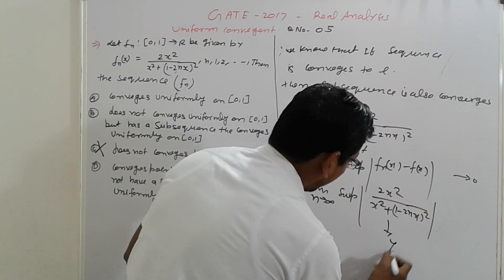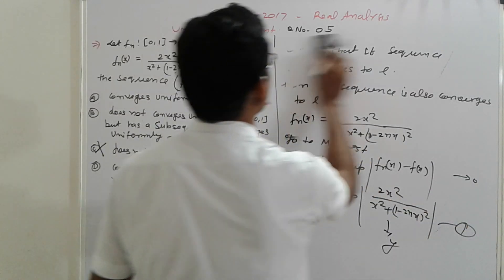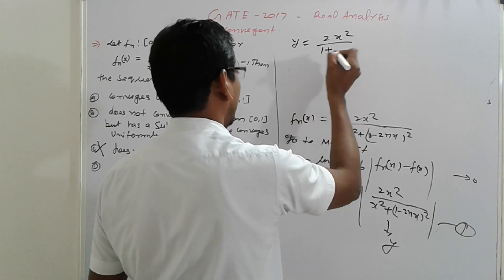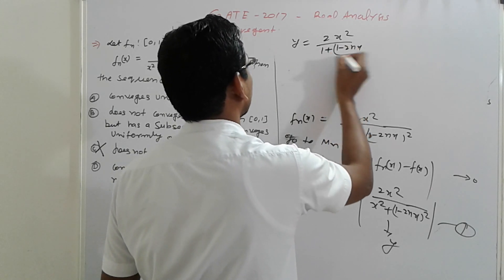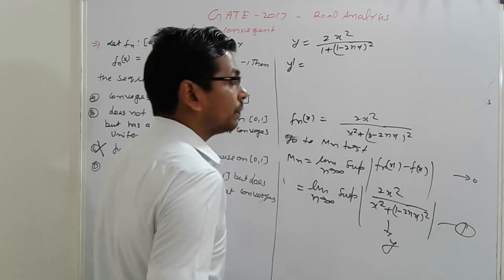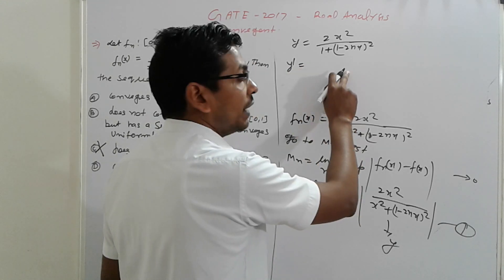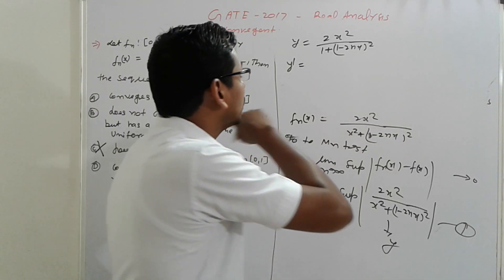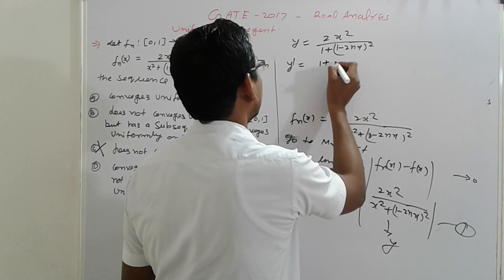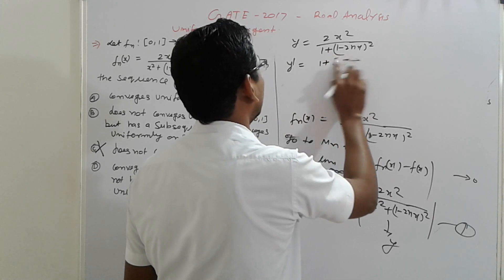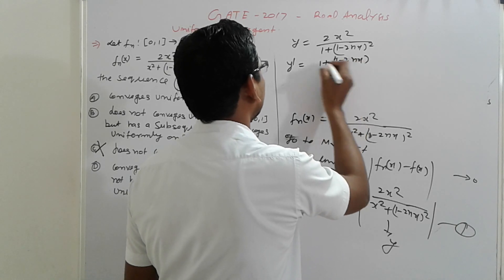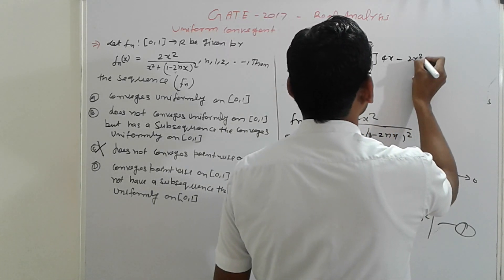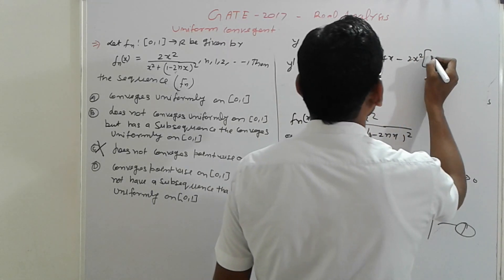So here that term, taking the y, suppose, which is y = 2x²/(1 - 2nx)². So y' = 2x²/(1+2nx)(1-2nx)².